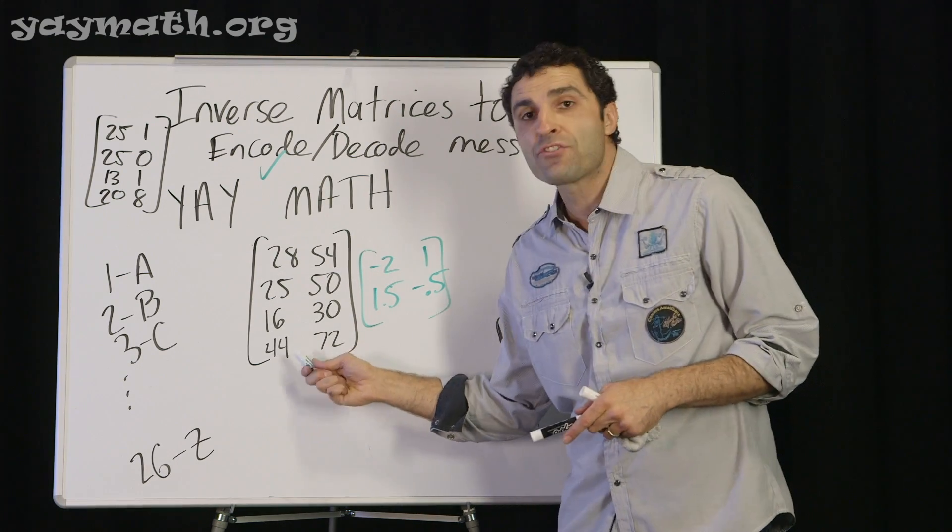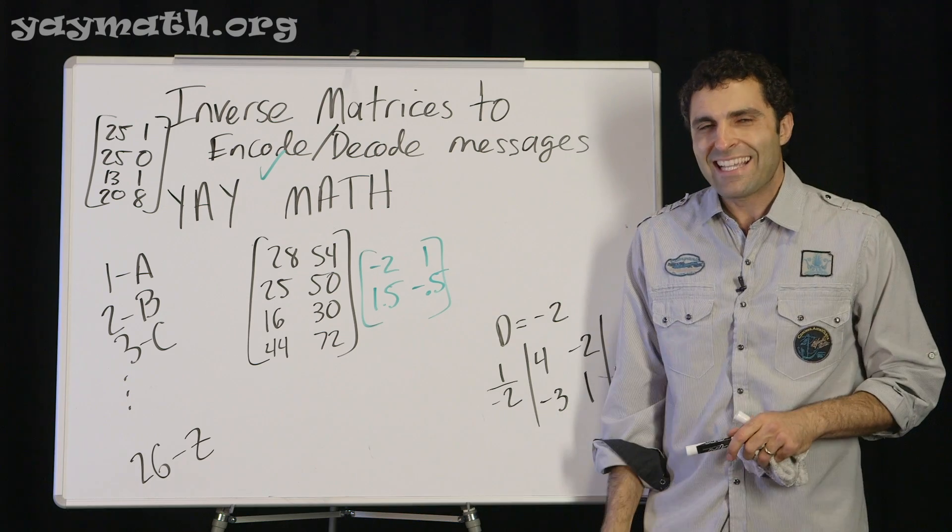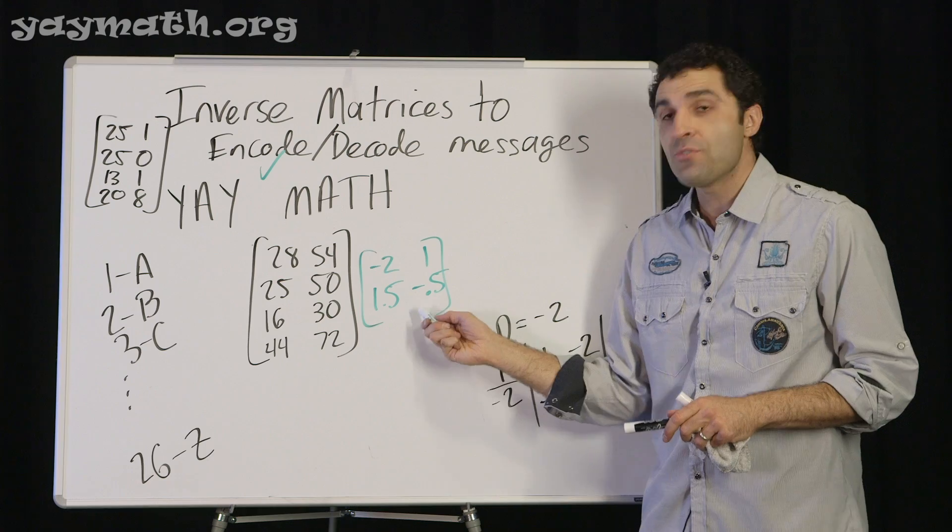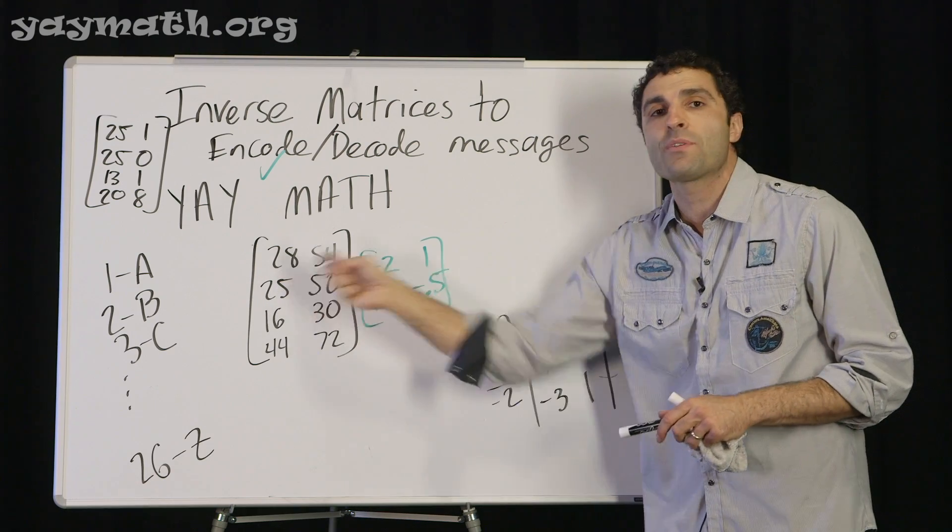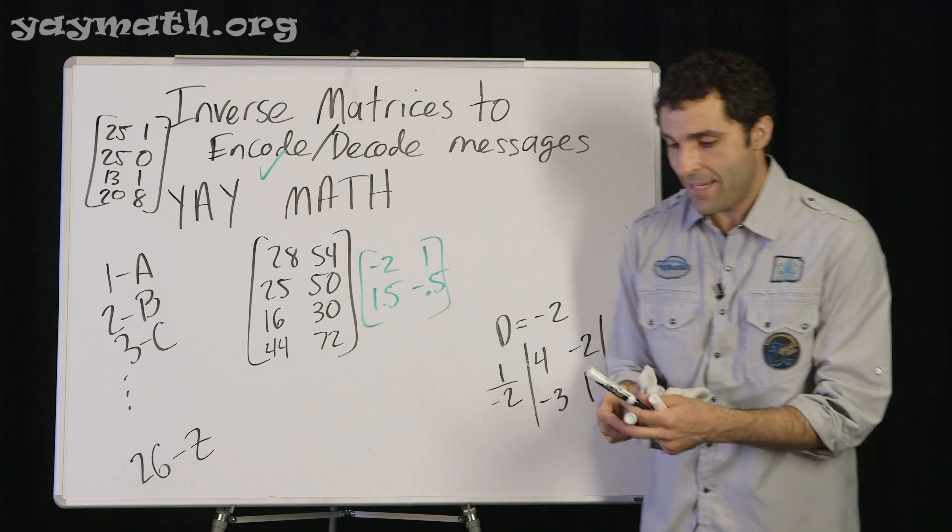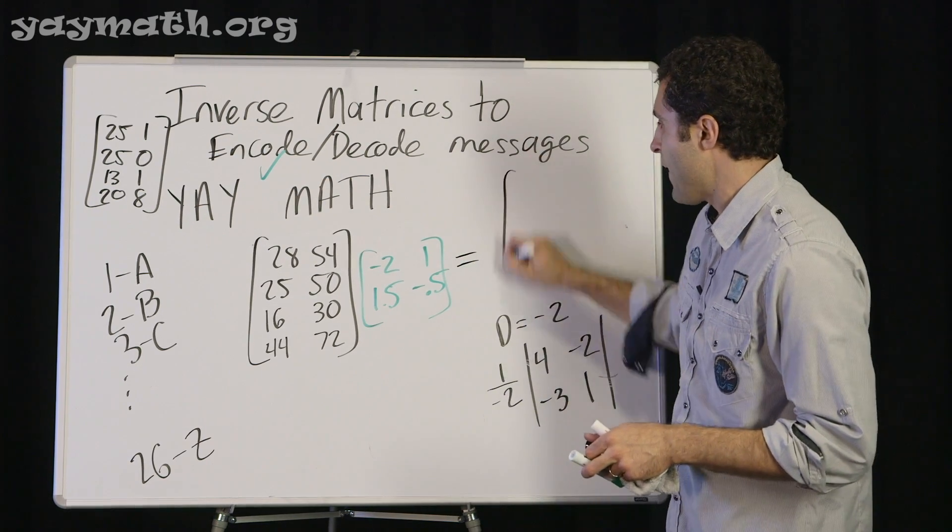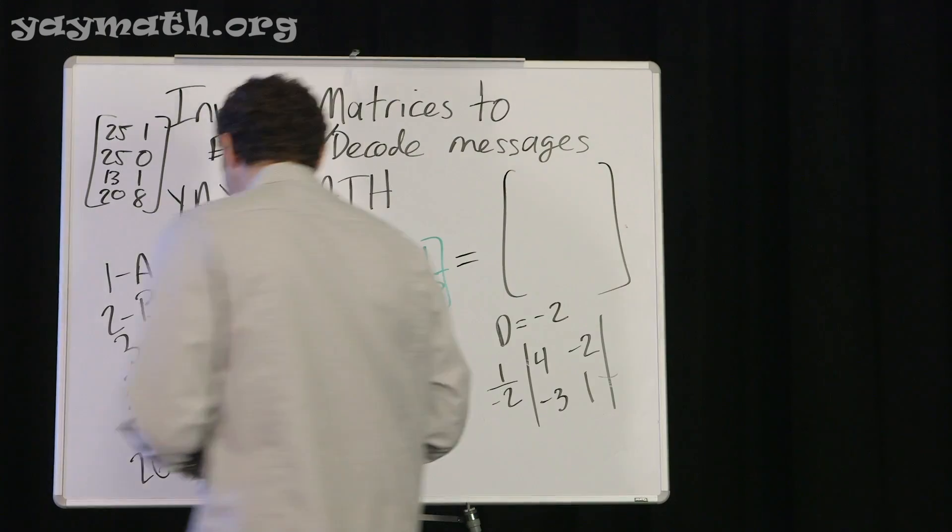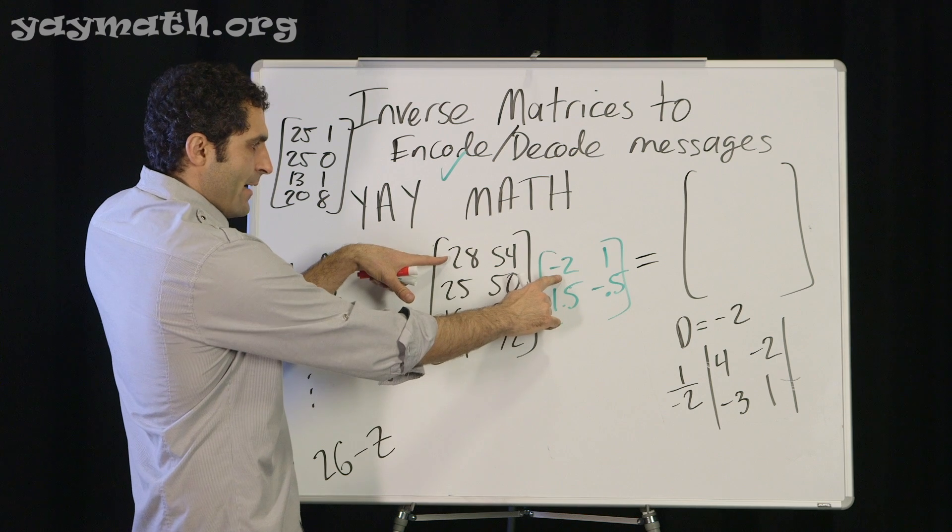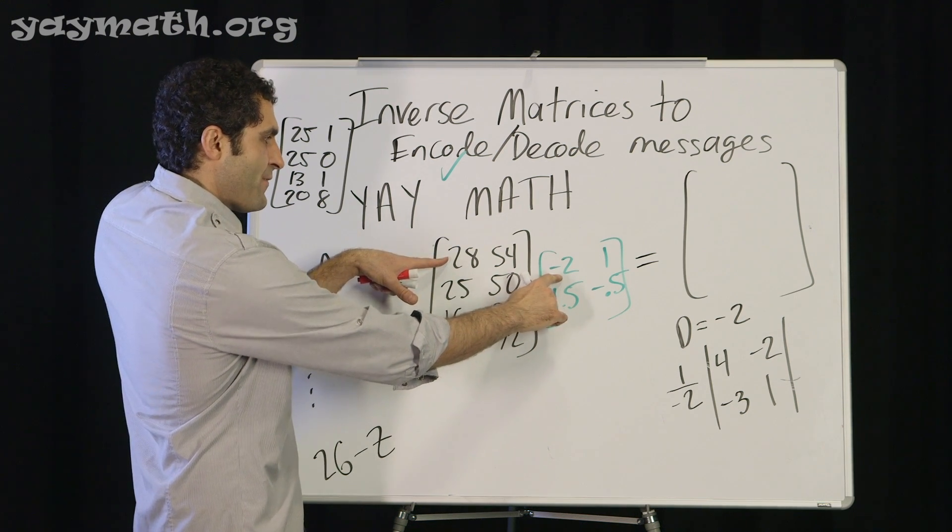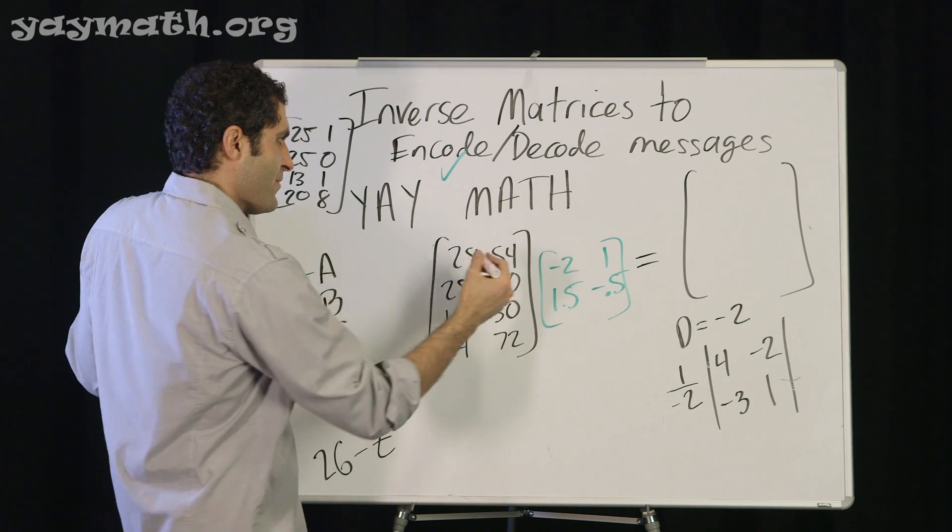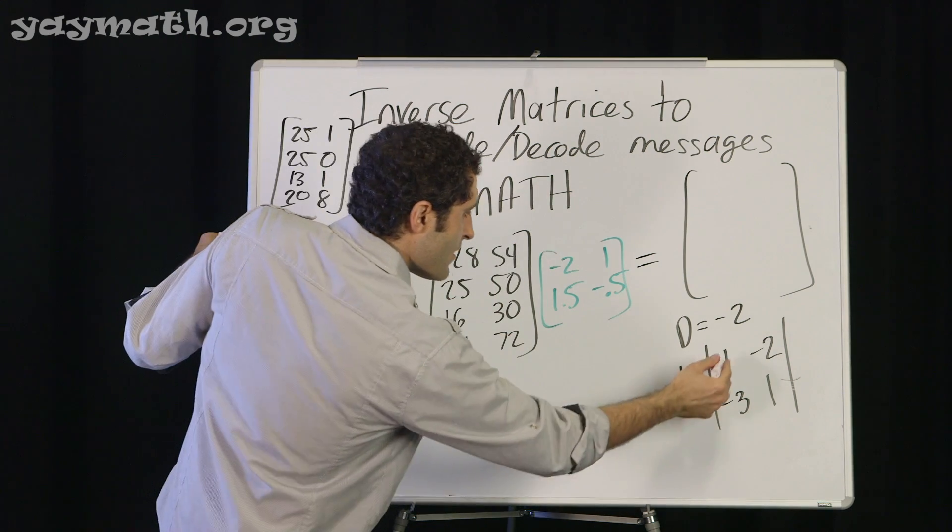So now this is the encrypted message I sent you, secretly, clandestine. I gave you the encoding matrix as well. You did the inverse of it. Now you should be able to decode what this message is. If you decode it, hopefully we'll get yaymath back as our answer. Let's multiply this as our final act. Here it comes. I hope it works. Please work. Please work. It's always possible that it won't.